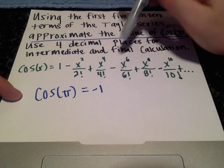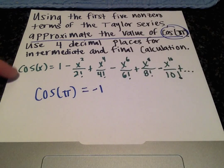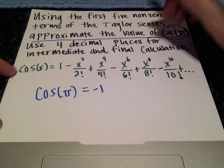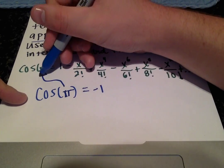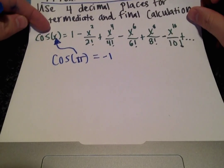But, so our answer should be in the ballpark or somewhere near this. But, for the Taylor series approximation, what we're going to do is plug in π for our x values. So, let's start doing that.